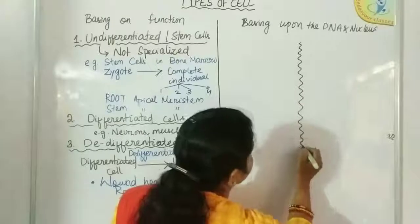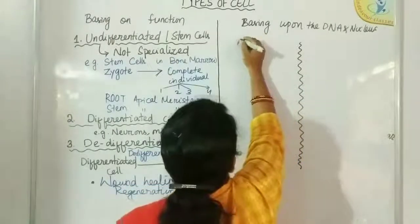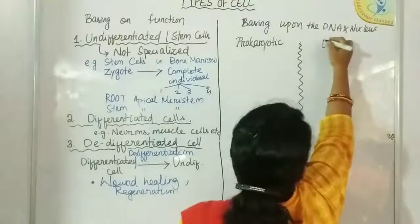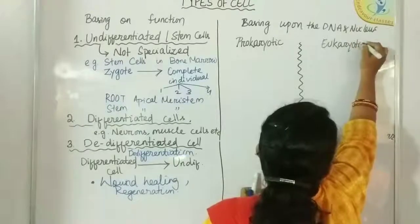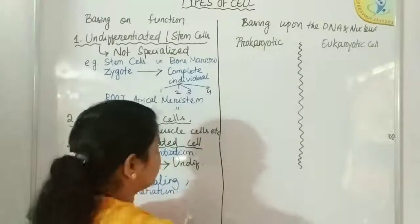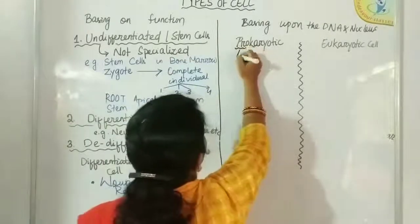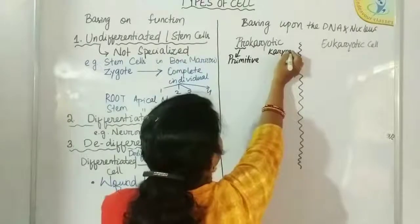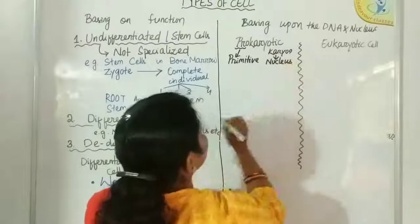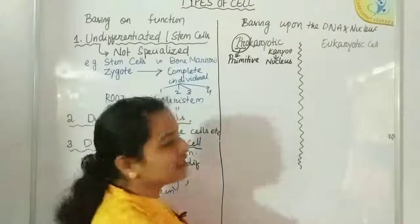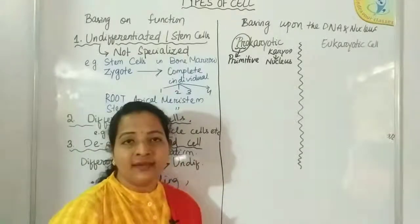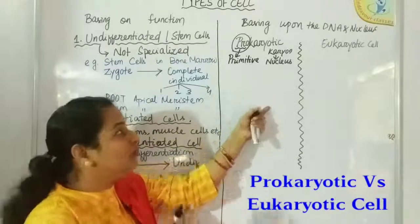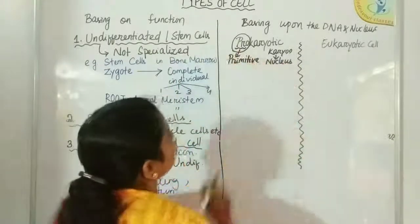So, based on DNA and nucleus, there are two types of cells: prokaryotic cells and eukaryotic cells. 'Pro' means primitive and 'karyon' means nucleus. Prokaryotic cells have a primitive type of nucleus — actually there is no definite nucleus; there is a nucleus-like region, which we will study later. So there is no nucleus and no DNA packed inside that nucleus — those cells are prokaryotic cells.